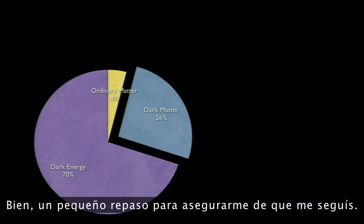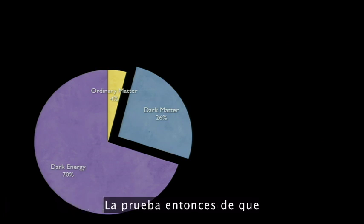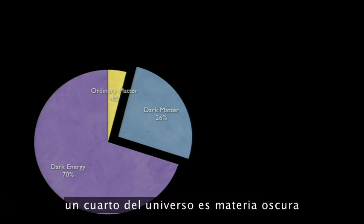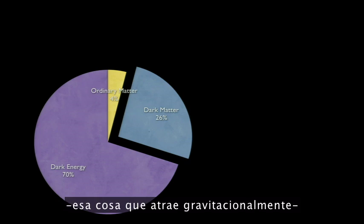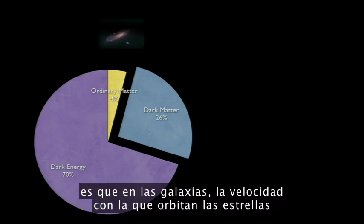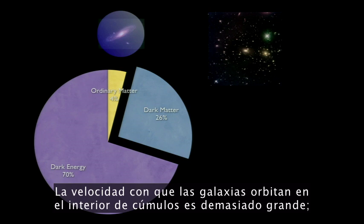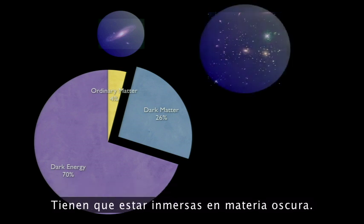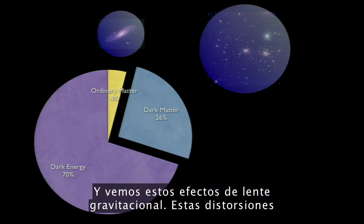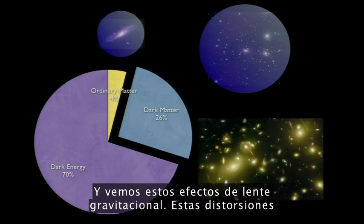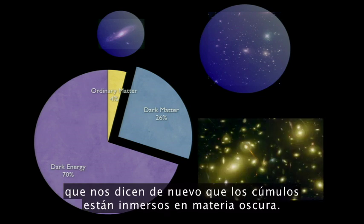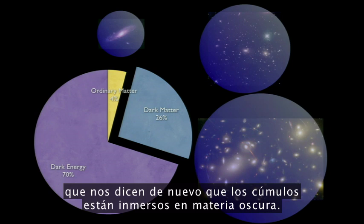So, a quick review of the evidence that a quarter of the universe is dark matter: the speeds with which stars orbit in galaxies is much too large — galaxies must be embedded in dark matter. The speed with which galaxies within clusters are orbiting is much too large — they must be embedded in dark matter. And we see these gravitational lensing effects, these distortions, that say clusters are also embedded in dark matter.